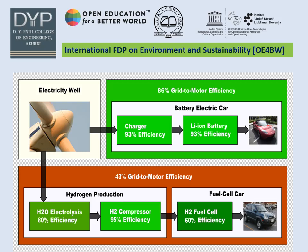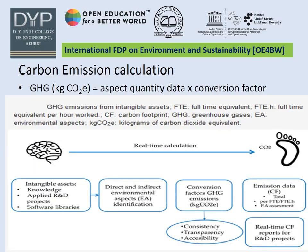Instead, if you use electricity directly feeding to a charger with 93% efficiency, which supplies a lithium-ion battery also at 93% efficiency, and that battery feeds the car, the battery electric vehicle achieves a grid-to-motor efficiency of around 86%.